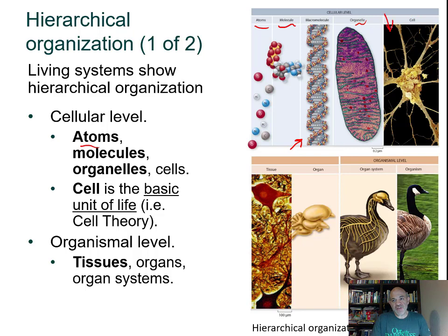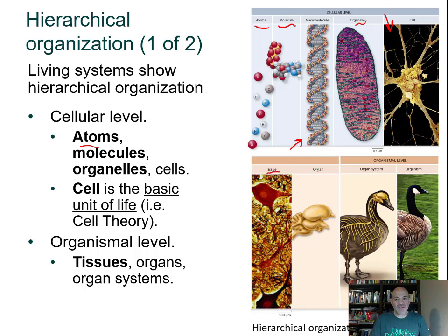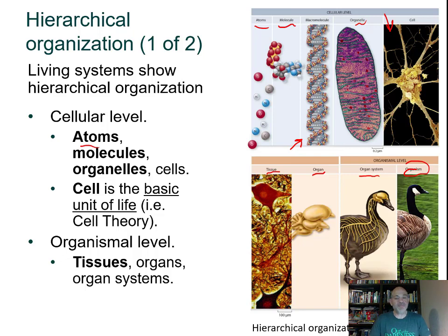A neuron is the next higher level of organization. Many neurons with supporting cells form nervous tissue. Two or more tissues come together to form an organ like the brain, which contains nervous tissue, connective tissue, and others. Organs form organ systems — for example, the nervous system includes the brain, spinal cord, nerves, and receptors. Finally, all of these form the entire organism.